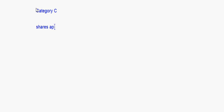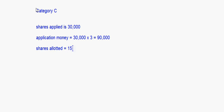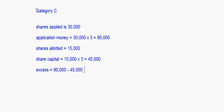Category C: shares applied is 30,000, so application money received is 30,000 into 3 which equals 90,000 rupees. Shares allotted is 15,000, so the amount going into share capital is 15,000 into 3 equals 45,000. The excess is 90,000 minus 45,000 which equals 45,000, and this 45,000 will be adjusted towards allotment.